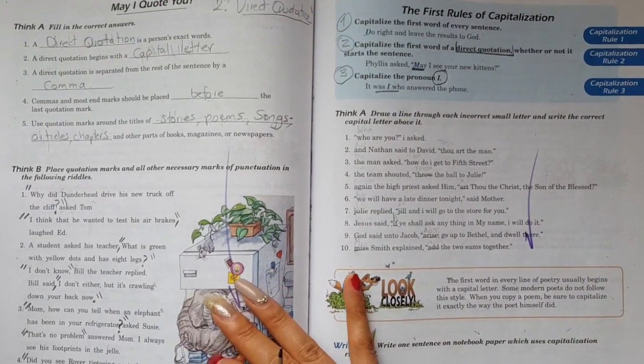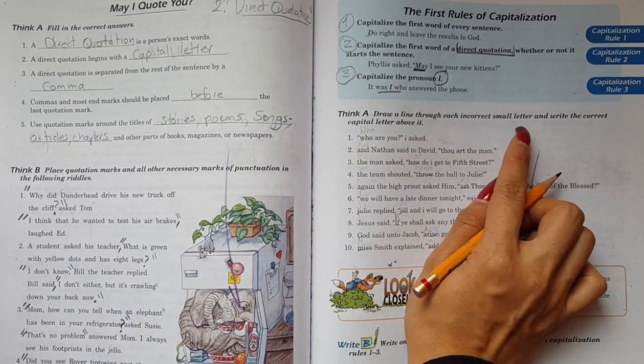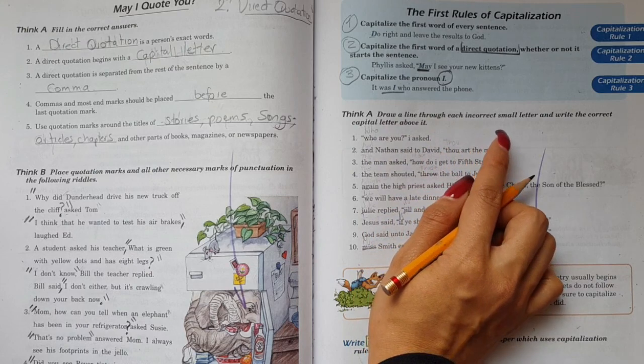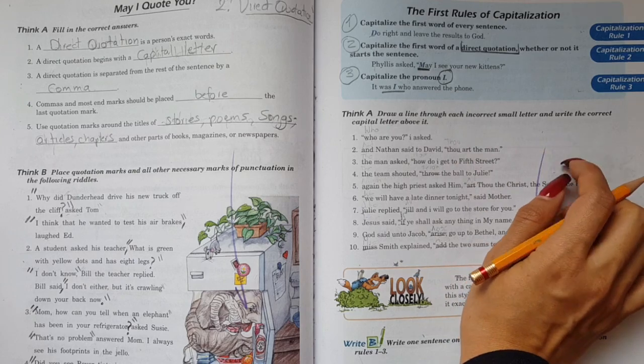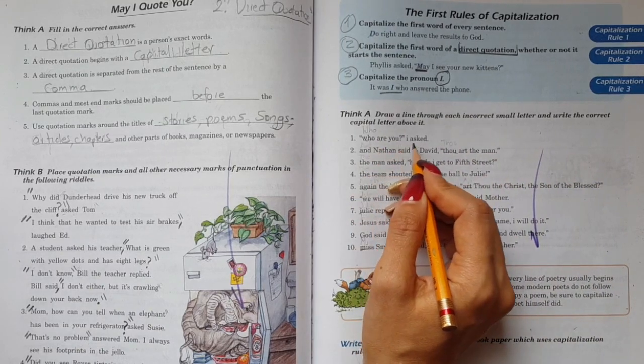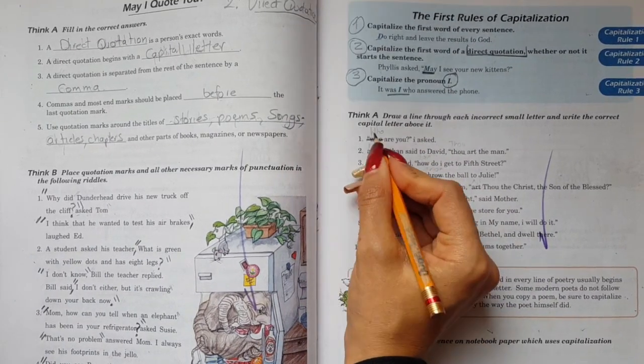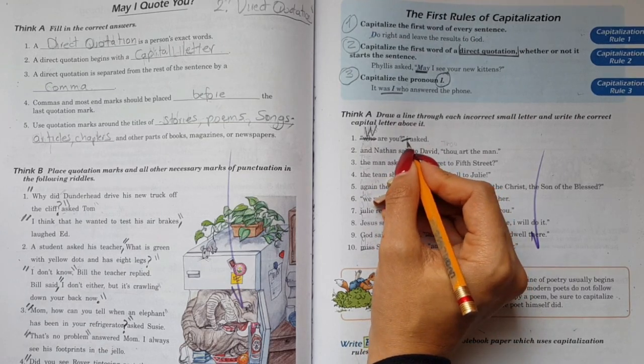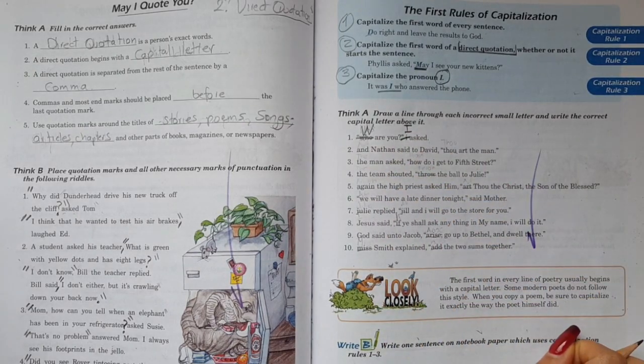Very good. So in that order we can start to do this one. Draw a line through each incorrect small letter and write a correct capital letter above it. For example, Who are you, I asked. Who - this is a direct quotation. It should have started with a capital letter. I - we already said the pronoun I must be capitalized.